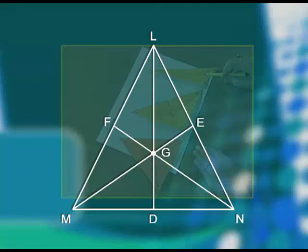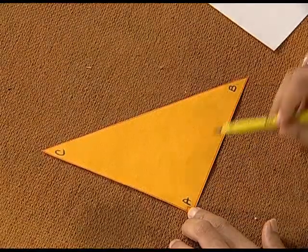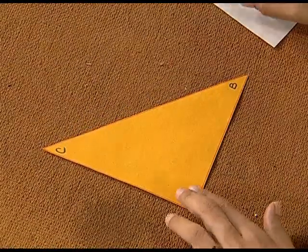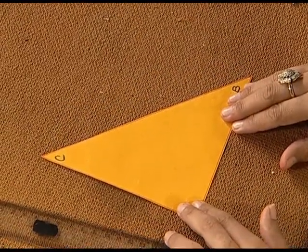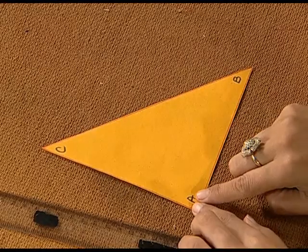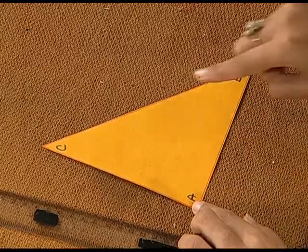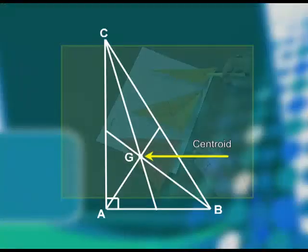Now we will take a right triangle. Here I have right triangle A B C. By following the same process, we can find medians from points A, B, and C. Observe carefully that in right triangle C A B, the centroid G lies inside the triangle.